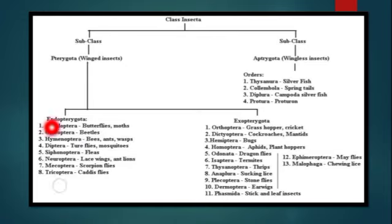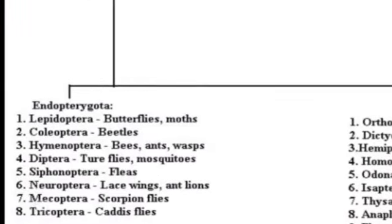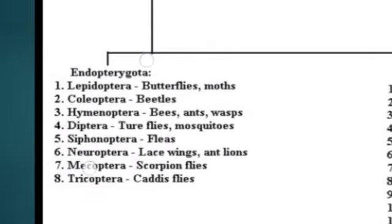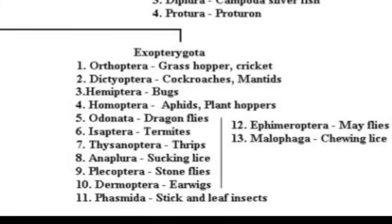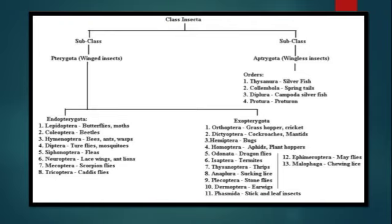So in the Endopterygota division, only four orders are included in your syllabus: Lepidoptera, Coleoptera, Hymenoptera, and Diptera. Similarly, in the Exopterygota division, only four orders are included in your syllabus: Orthoptera, Hemiptera, Odonata, and Isoptera. In our next lecture, we will discuss in detail about the Apterygota order, that is Thysanura.